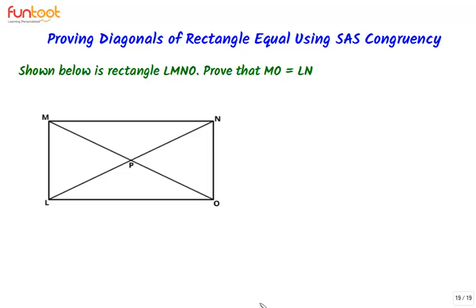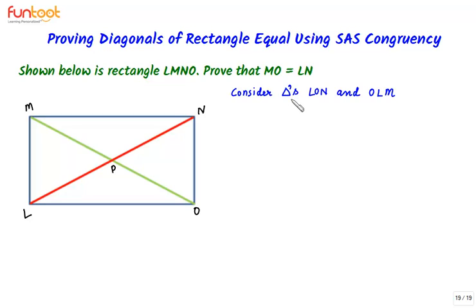Let's prove it using this approach. All we are given is that the shape LMNO is a rectangle. To use congruency for the proof, we first need to identify the pair of triangles which we will take and prove congruent. One side of each triangle should be the diagonal of the rectangle. So let's consider triangle LON and triangle OLM.